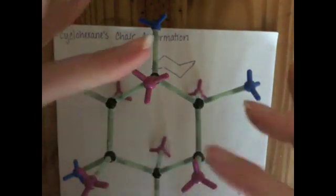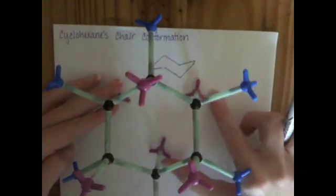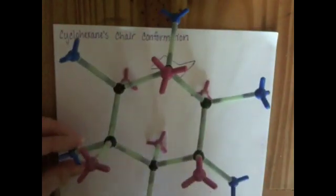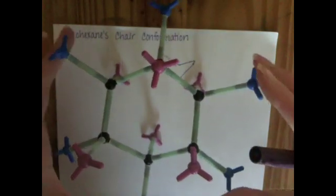So you've got these three pointing straight up, these three pointing straight down, and those are called axial, the axial substituents or hydrogens. And then you've got these six that are all kind of in a ring around the cyclohexane. Those ones are called equatorial.